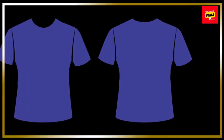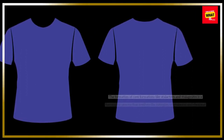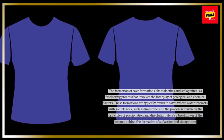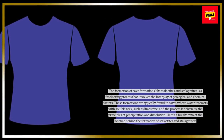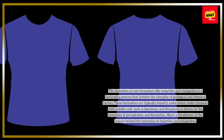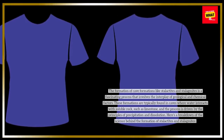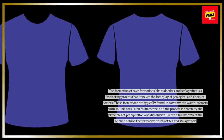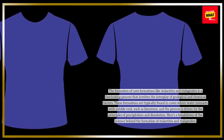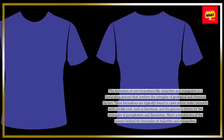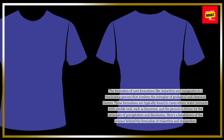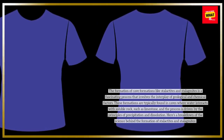The formation of cave formations like stalactites and stalagmites is a fascinating process that involves the interplay of geological and chemical factors. These formations are typically found in caves where water interacts with soluble rock, such as limestone, and the process is driven by the principles of precipitation and dissolution. Here's a breakdown of the science behind the formation of stalactites and stalagmites.